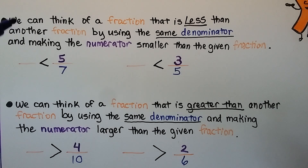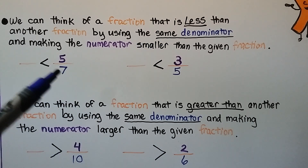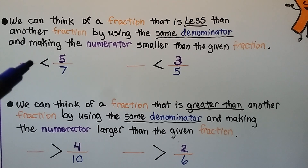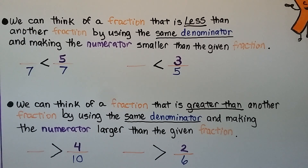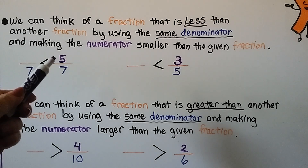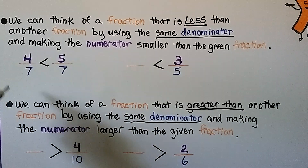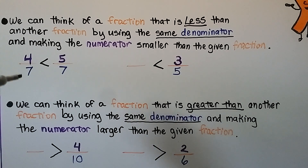We can think of a fraction that is less than another fraction by using the same denominator and making the numerator smaller than the given fraction. We need a fraction smaller than 5 sevenths, so we use the same denominator 7, then think of a number less than 5 for the numerator — we could use 4, 3, 2, 1, or 0. Any of those would work and be less than 5 sevenths.